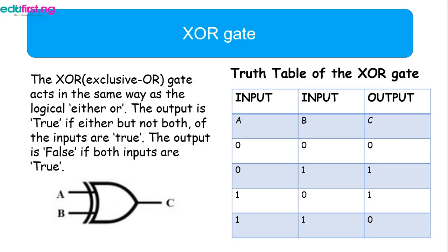For the exclusive OR gate, the output is true if either of the inputs is true, but not both. It will only be true if any one of the inputs is one — if either of the inputs is one, then the output will be true.